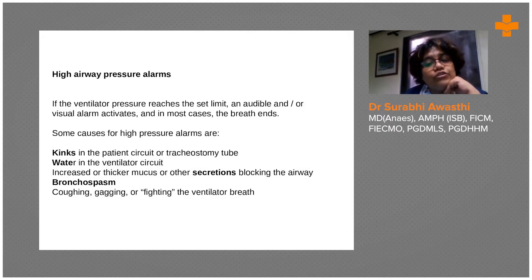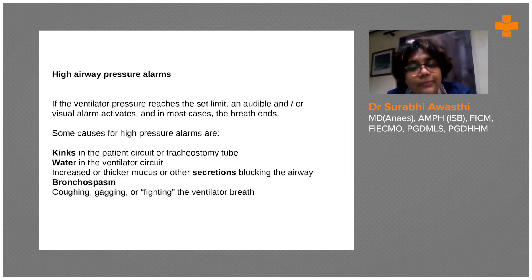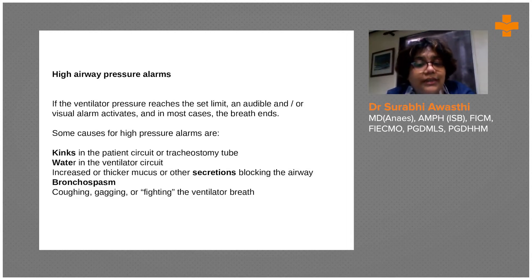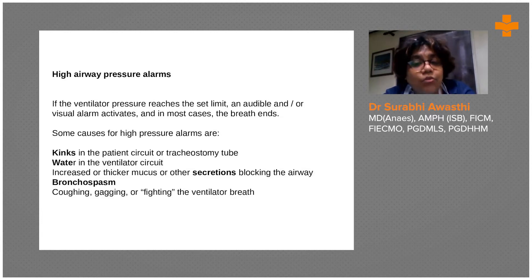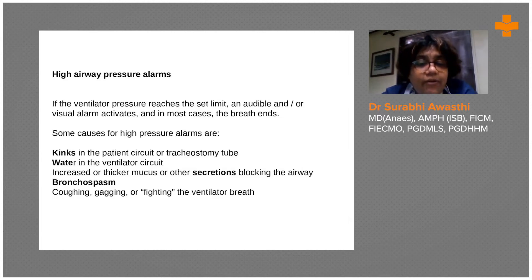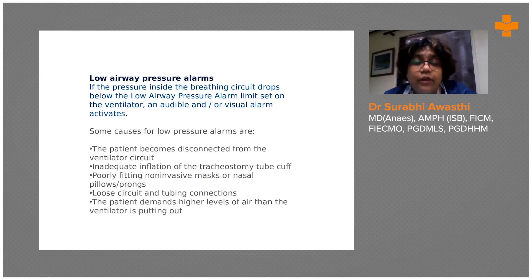For high airway pressure alarms, causes include kinks in the patient circuit or tracheostomy tube, secretions, bronchospasm, water in the circuit — very important when you have water traps — or a patient fighting and coughing on the tube. All of these can cause high pressure airway alarms.